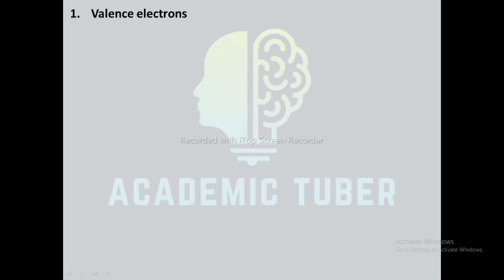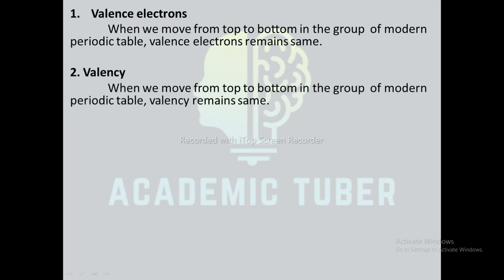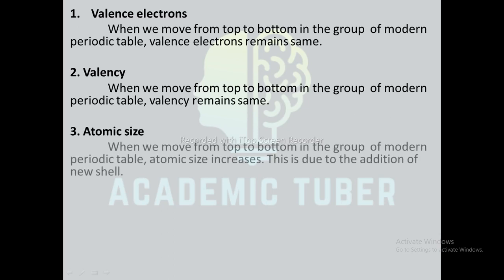First one is valence electron: when we move from top to bottom in a group of the modern periodic table, valence electron remains the same. Similarly, valence also remains the same when we move from top to bottom in a group. Atomic size: when we move from top to bottom in a group of the modern periodic table, atomic size increases. This is due to the addition of new shells.